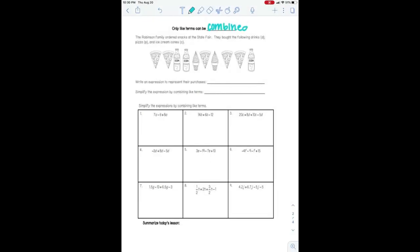So only like terms can be combined. And we're going to look at kind of like a visual representation of this. So the Robinson family ordered snacks at the state fair. They bought the following drinks, which are going to be represented with a D. Pizza will be represented with a P. Ice cream cones will be represented with a C. So I'm going to go ahead and label those with the appropriate variable. And I'm just going to write it out full. I'm not going to simplify it at all. Okay.